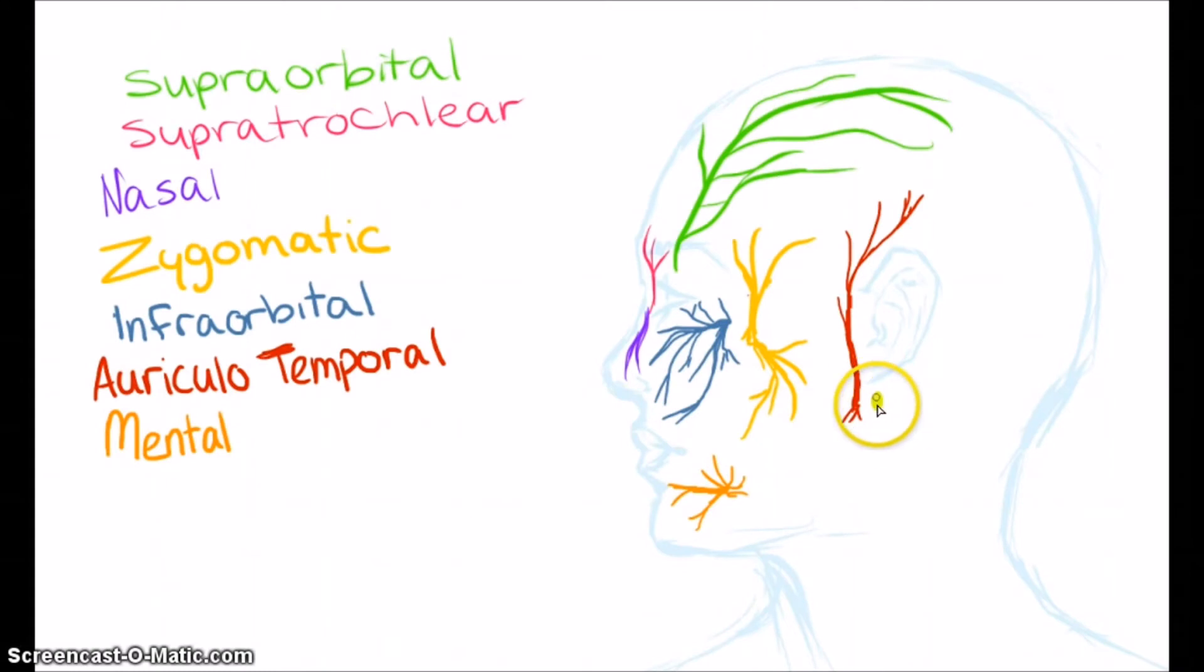The posterior auricular affects the muscles behind and below the ear.